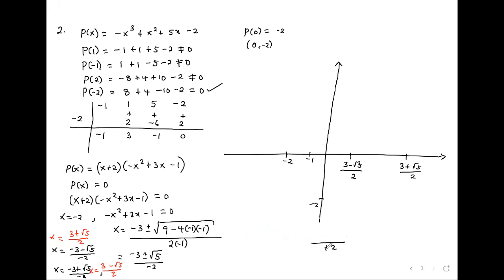Student question: do we get the y-intercept from the original equation or the factorized equation? From the original equation. The factorized one can also work — as long as you substitute zero everywhere — but the original is nicer because there's no solving, just read off the constant.